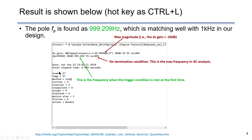If you run the simulation and go to the SPICE error log (or use the hotkey Control+L), you can find the result. The DC gain as defined is minus 20 dB — this is the maximum magnitude in the Bode plot. The pole location Fp is found at approximately 999 Hz to 1 kHz, which matches our design.